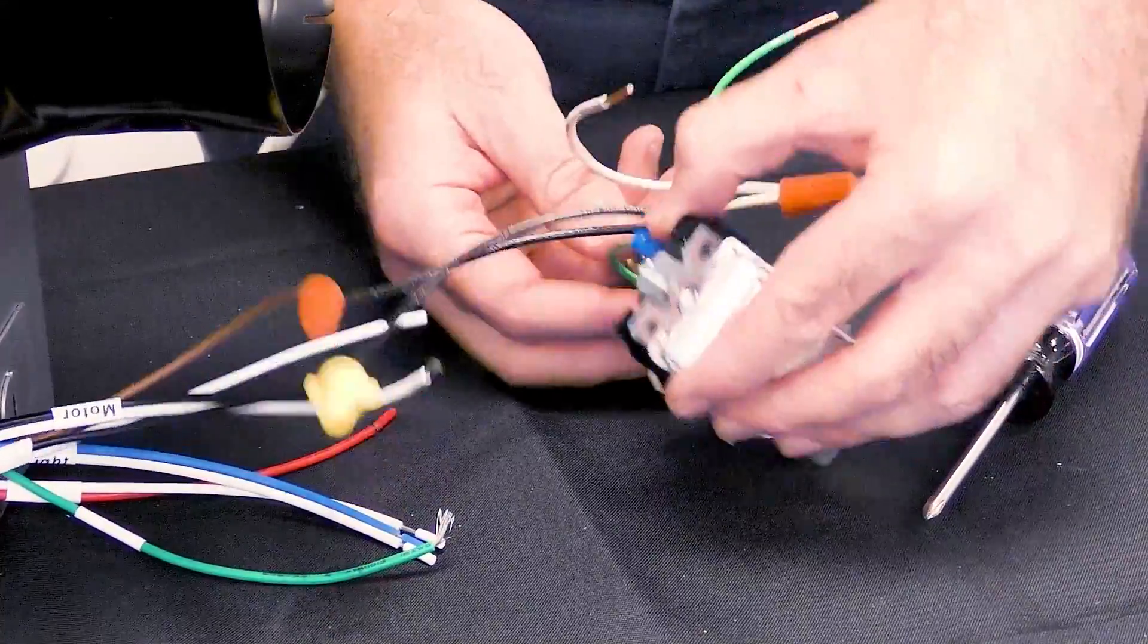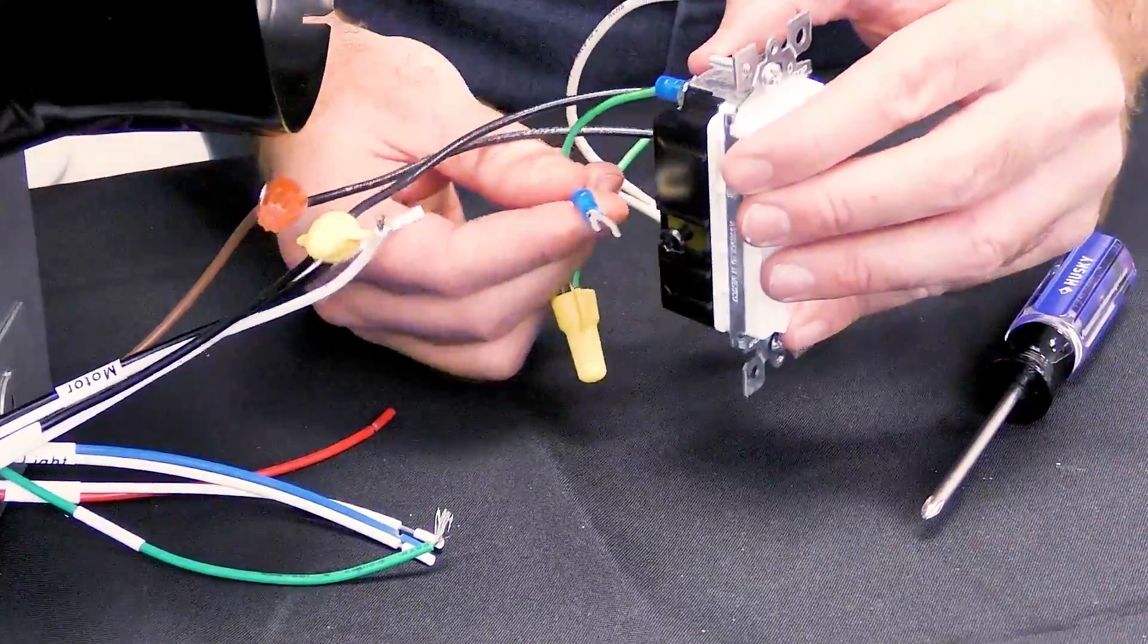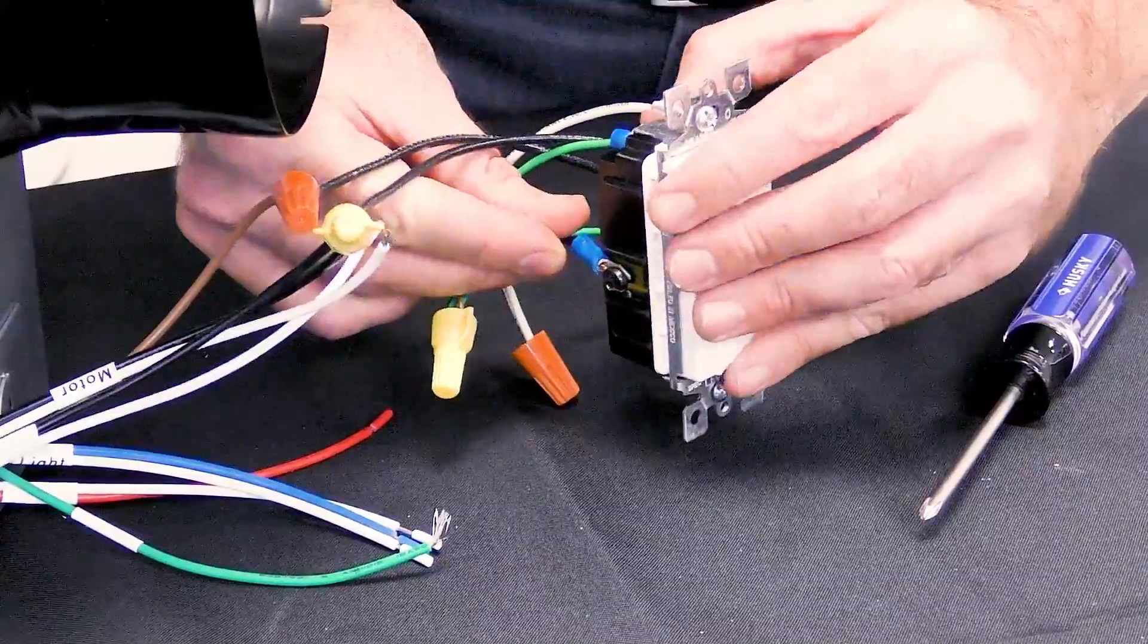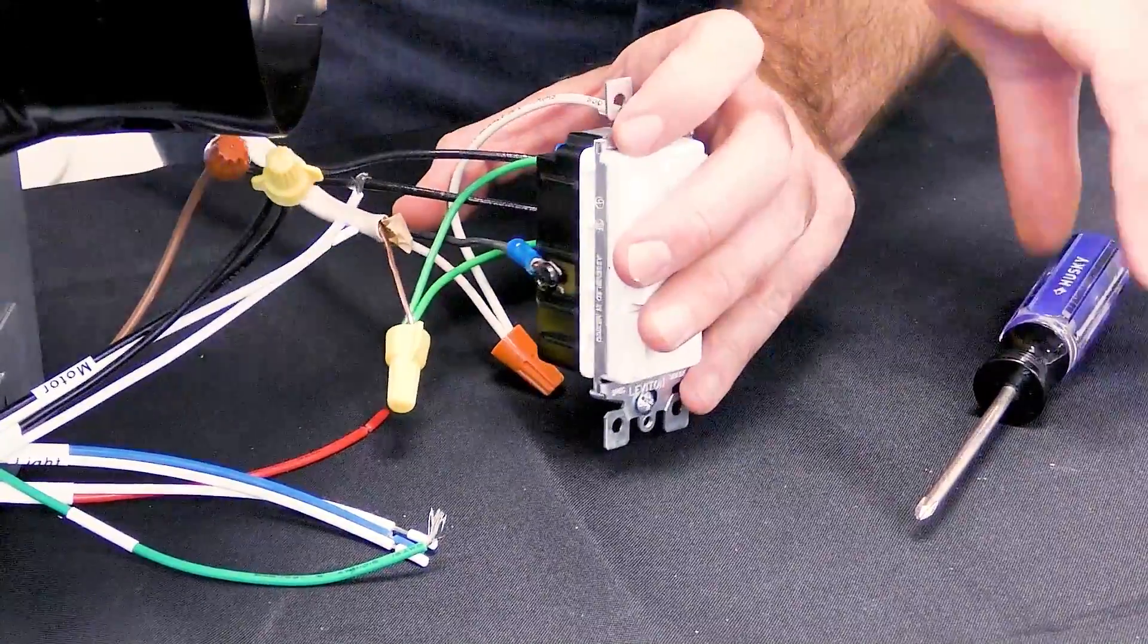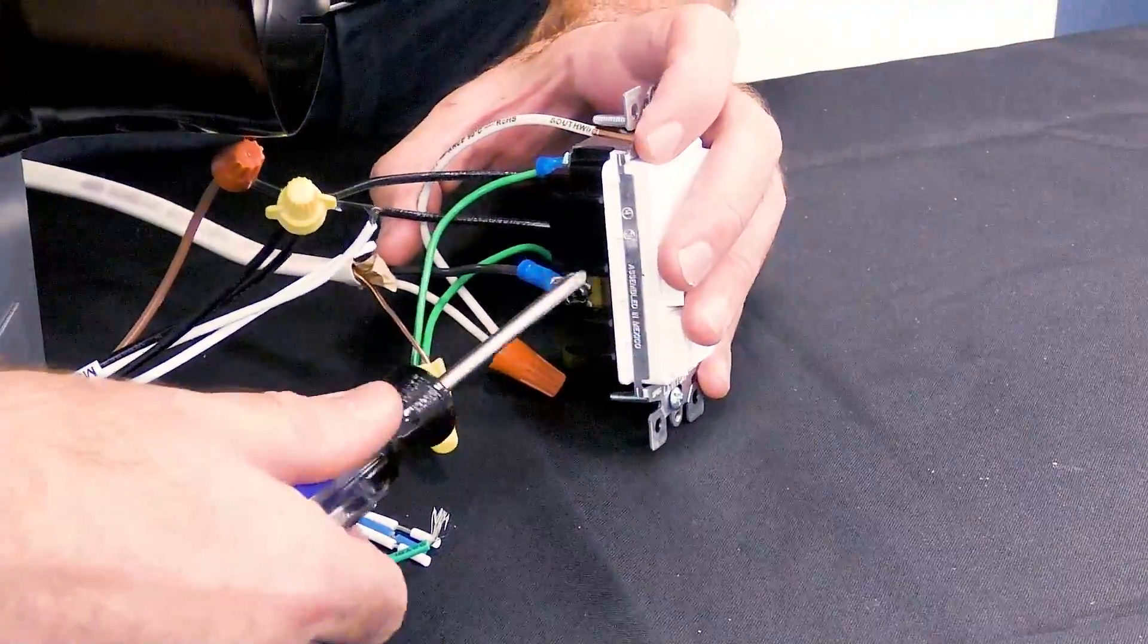Attach the incoming building power supply wire to the line side of the switch. Use your Phillips head screwdriver to ensure the connection is tight.